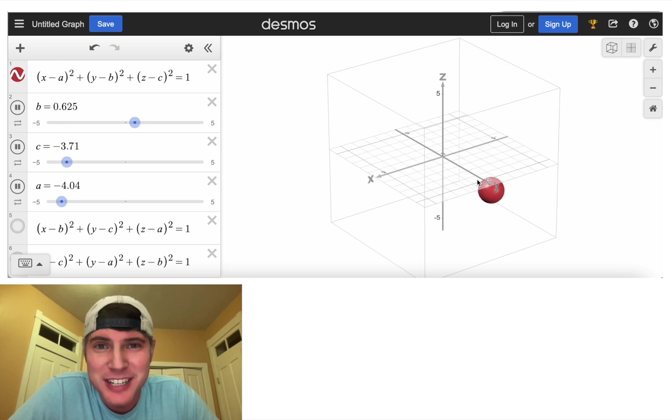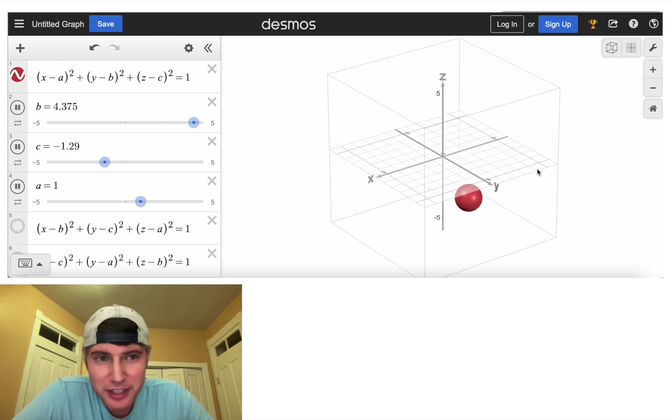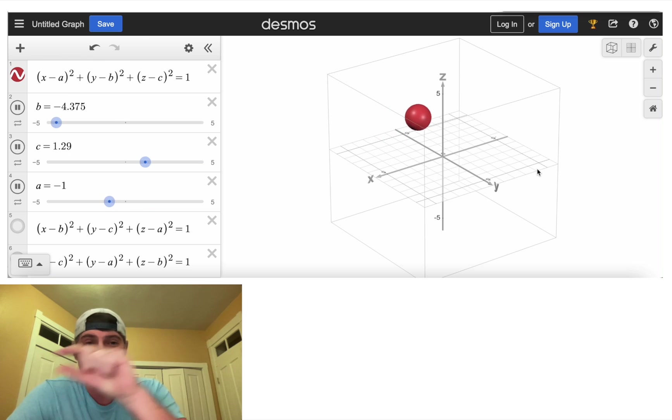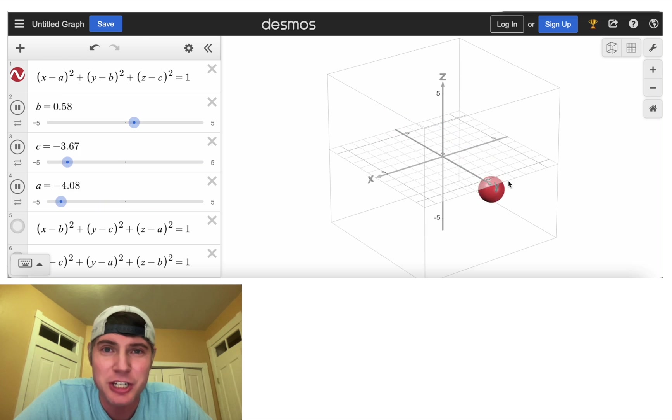Hey guys, you can now do 3D graphing in Desmos. And I want to show you how to create this bouncing ball that goes off the corners of the cube, just like the DVD logo on a TV screen, but in three dimensions.